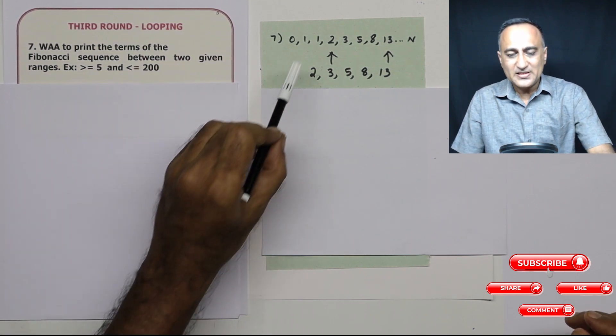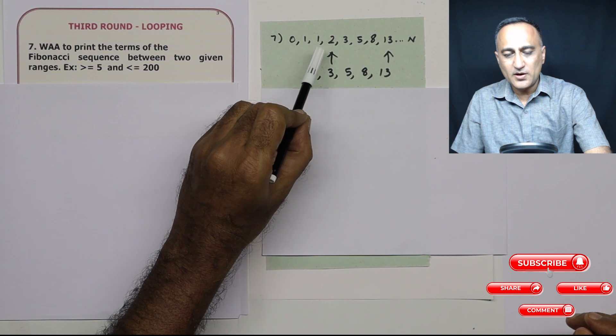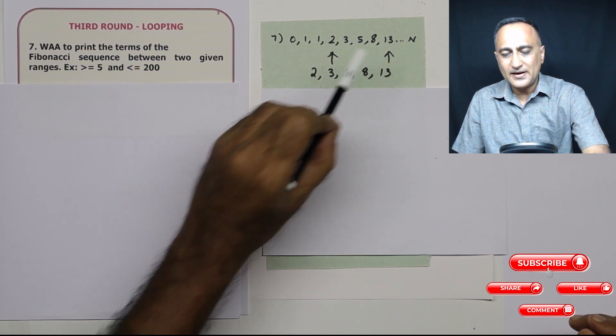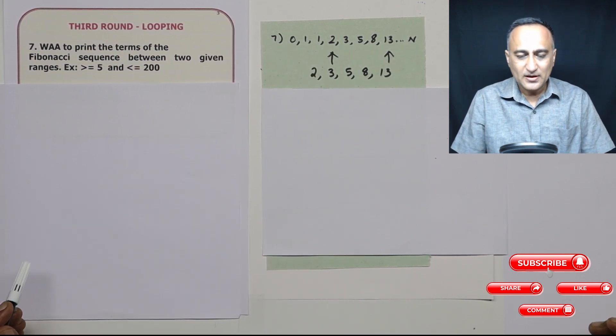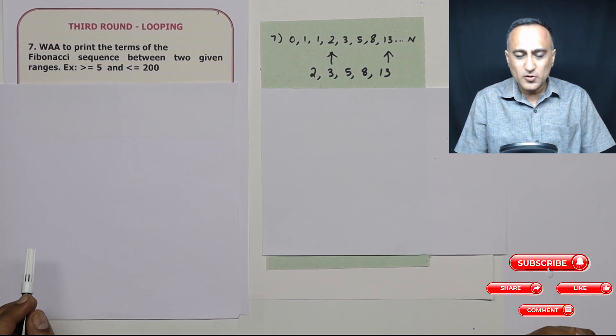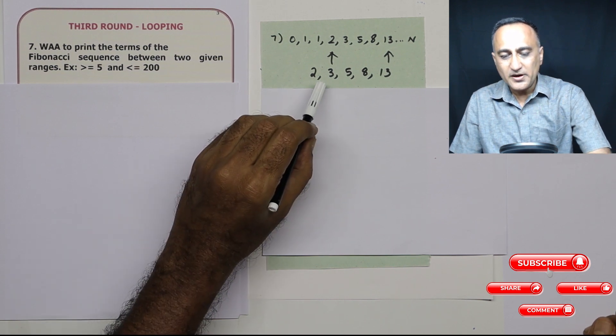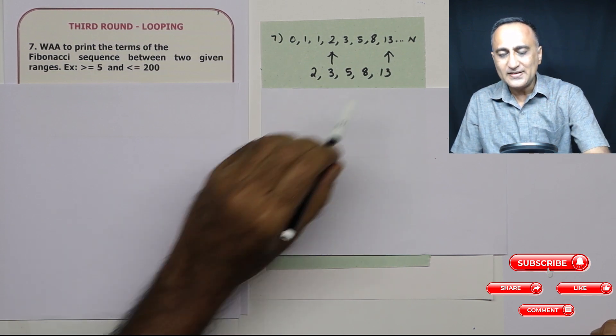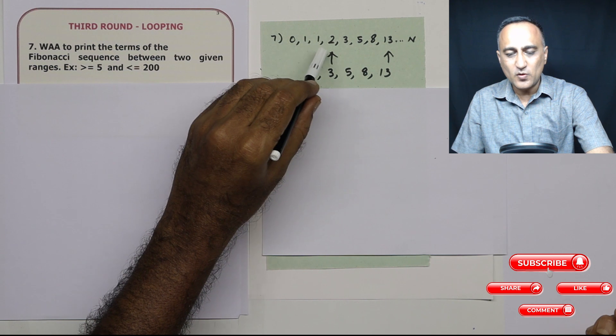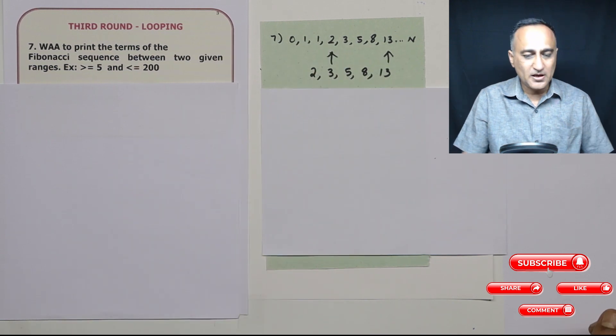Suppose for example, this is the Fibonacci sequence: 0, 1, 1, 2, 3, 5, 8 and so on till n. Suppose I tell you the range should be between 2 and 13. So the output will only be 2, 3, 5, 8 and 13. None of these 0, 1, 1 and anything after 13 should be printed.